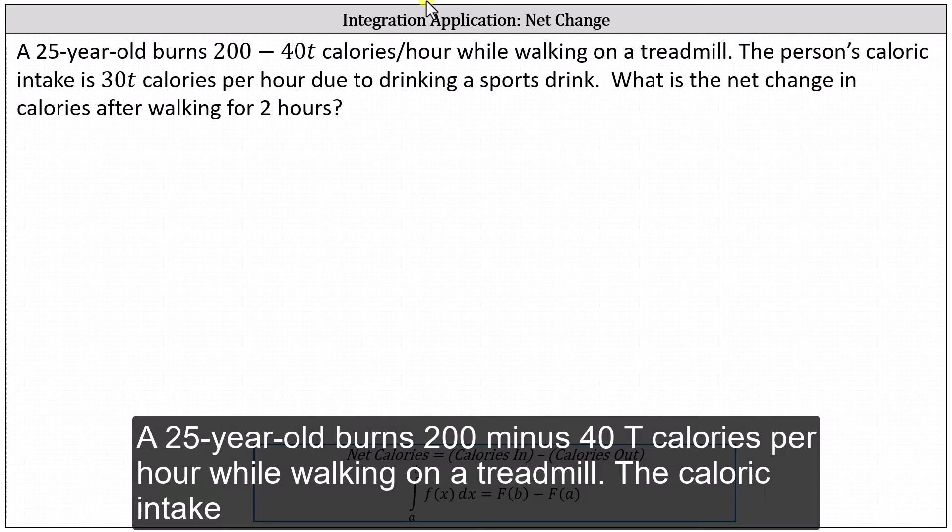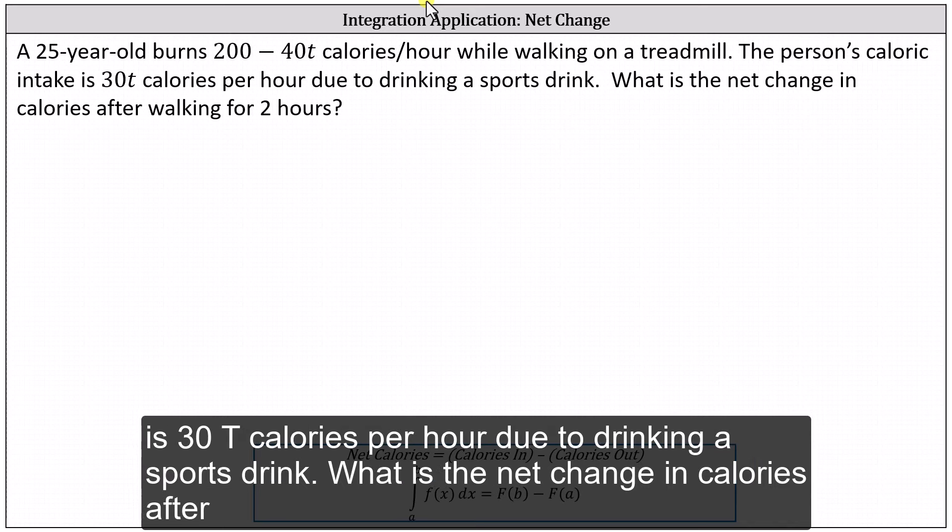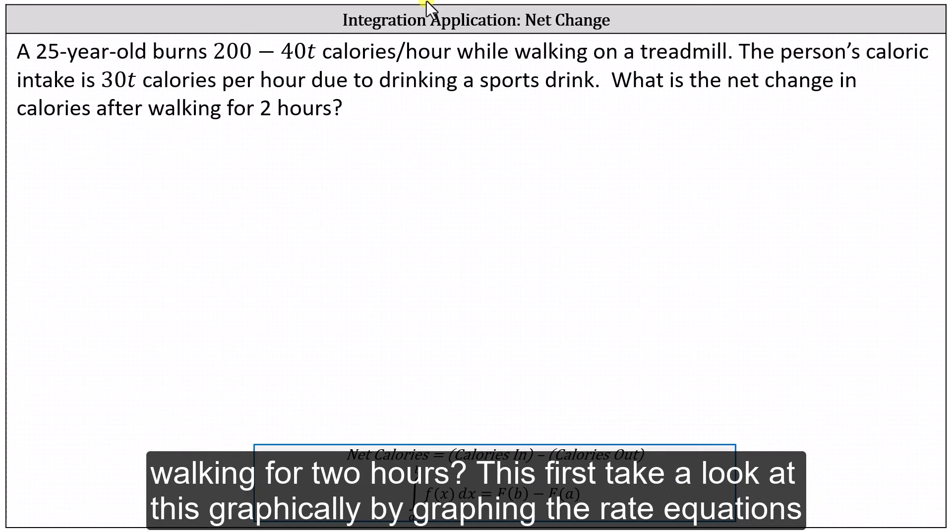A 25-year-old burns 200 minus 40T calories per hour while walking on a treadmill. The caloric intake is 30T calories per hour due to drinking a sports drink. What is the net change in calories after walking for two hours?